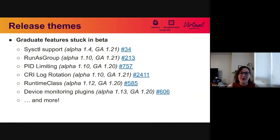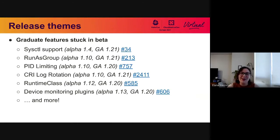One of the things I want to talk about today is what we've been up to in SIG Node in the past few releases — what sorts of features we've graduated. One of our themes has been graduating features stuck in beta. For example, we have Sysctls support, which was alpha in 1.4 but we recently graduated that in the 1.21 release. We also graduated RunAs group and CRI log rotation in 1.21, and in 1.20 we graduated PID limiting, runtime classes, third-party device monitoring plugins, and many more.